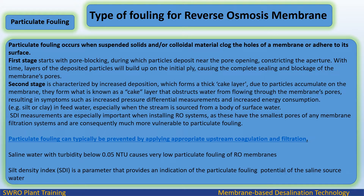For example, silt or clay in feed water, especially when the stream is sourced from a body of surface water. SDI measurements are especially important when installing RO systems, as these have the smallest pores of any membrane filtration systems and are consequently much more vulnerable to particulate fouling. Particulate fouling can typically be prevented by applying appropriate upstream coagulation and filtration. Saline water with turbidity below 0.05 NTU causes very low particulate fouling of RO membranes.